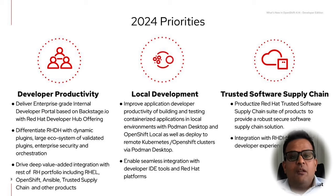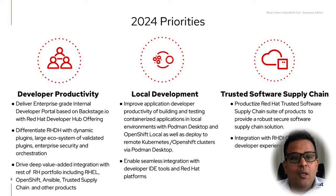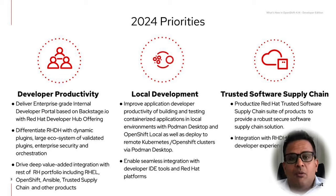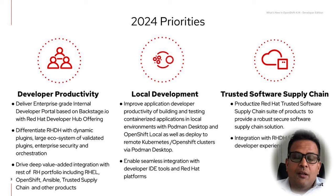It's an exciting year for us in terms of new products and new initiatives that we are able to bring to market. We have three big priorities. Number one is developer productivity — how do we help improve developer productivity for engineering organizations that are struggling as they're trying to collaborate across multiple teams, share best practices, and deliver software on time. One of the key things we're doing is delivering an enterprise-grade internal developer portal platform based on Backstage.io called the Red Hat Developer Hub.